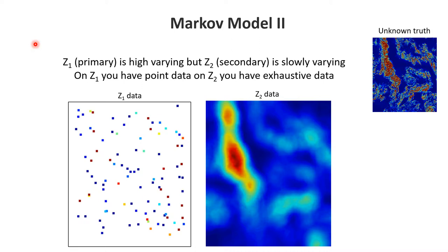As we saw in the previous video on co-kriging and co-simulation, for co-located co-simulation there are two methods: Markov model 1 and Markov model 2. Markov model 2 is the most known, where our primary variable Z1 is highly varying and we have point data on that, while our secondary variable is slowly varying but we have exhaustive data on it.